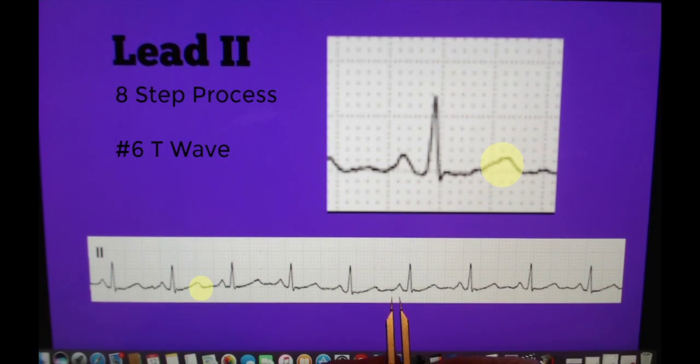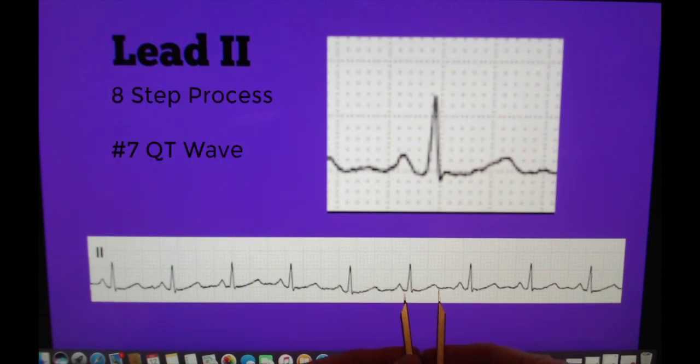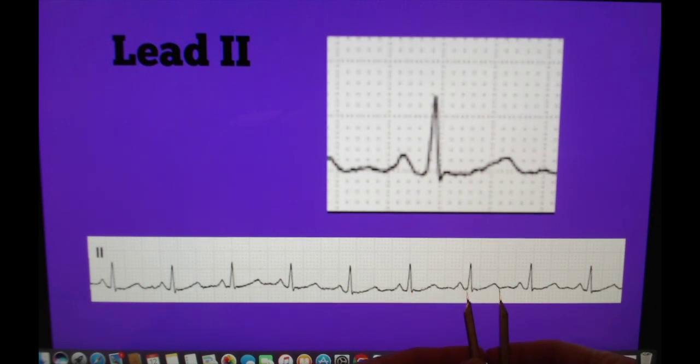In step six we are going to look at the T waves. We can see that they are round and upright and follow every QRS complex. So then we can quickly go into measuring our QT interval. From the first downstroke to QRS to the end of the T wave, we measure that and we find here that we have a calculation of 0.036 seconds which is within normal range.